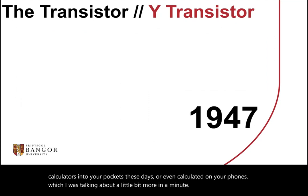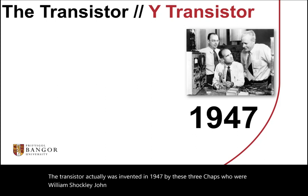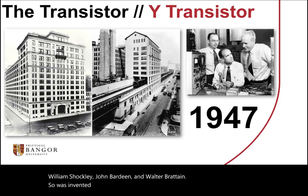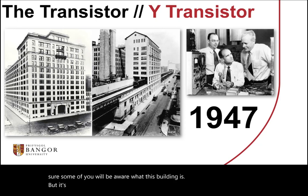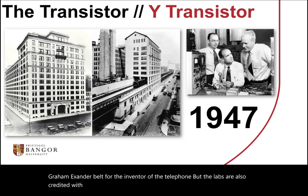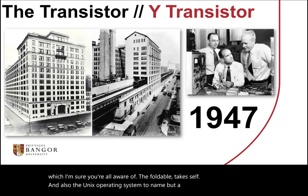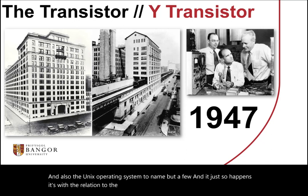The transistor was actually invented in 1947 by William Shockley, John Bardeen, and Walter Brattain, and first demonstrated in this building here — the Bell Laboratories, located on Murray Hill in New Jersey. The Bell Laboratories are named after Alexander Graham Bell, the inventor of the telephone. The labs are also credited with the development of radio astronomy, the laser, the photovoltaic cell, and the Unix operating system, to name but a few. It is now owned by the Finnish Nokia company.